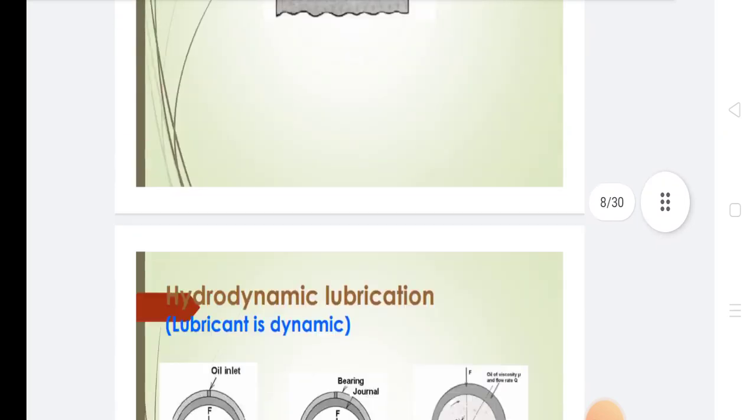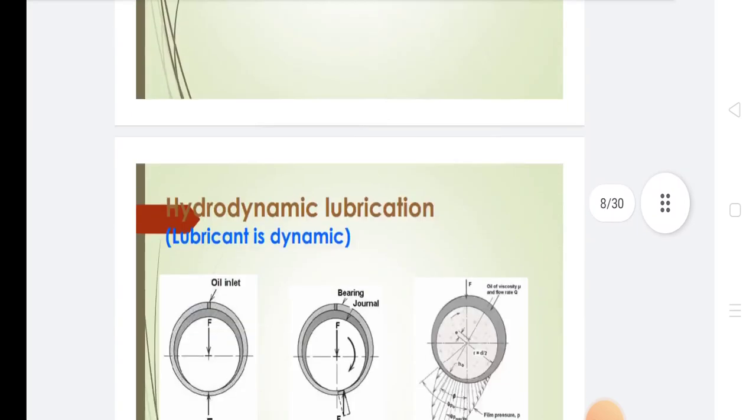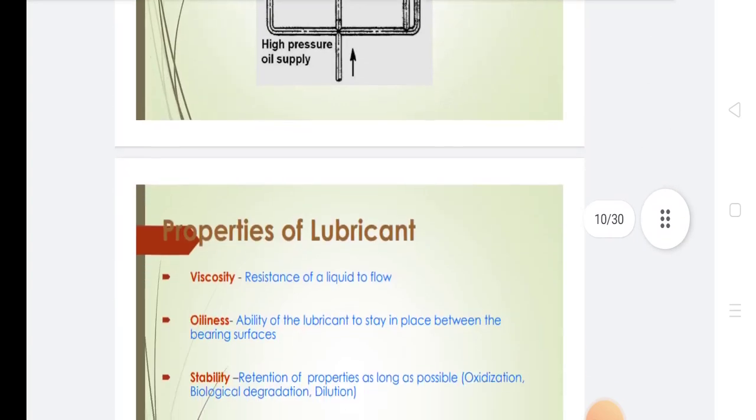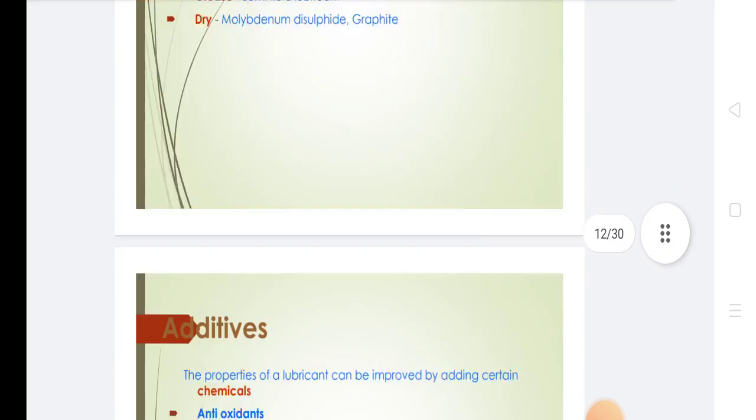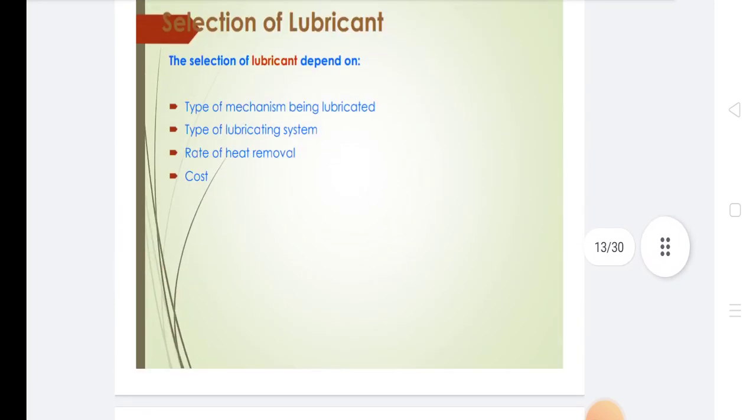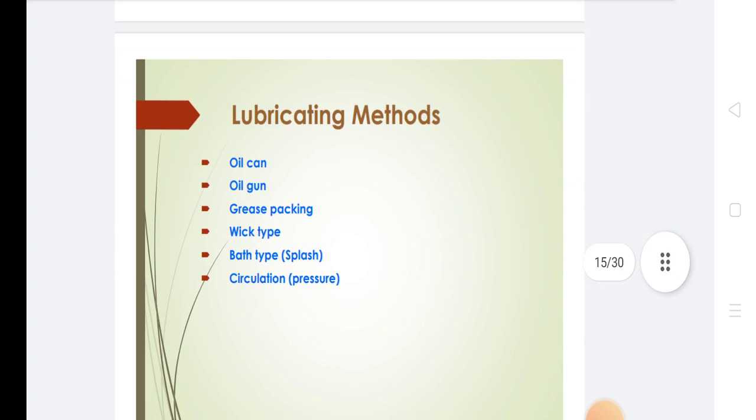Lubricating methods include the following: oil can, oil gun, grease packing, wick type, bath type, and circulation.